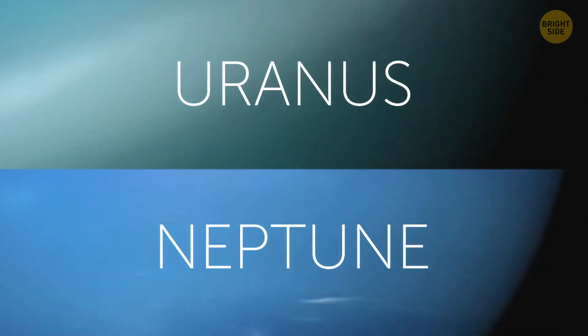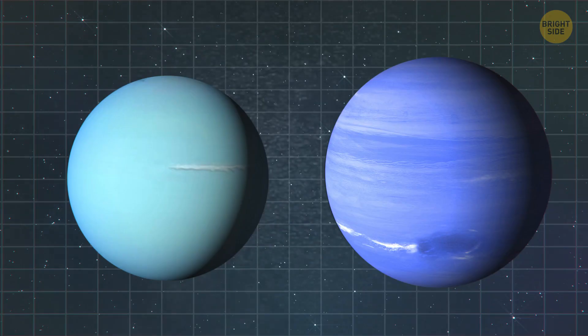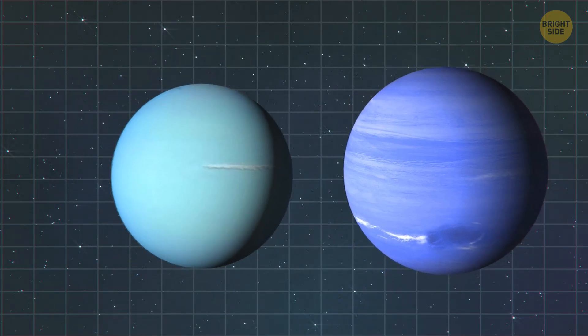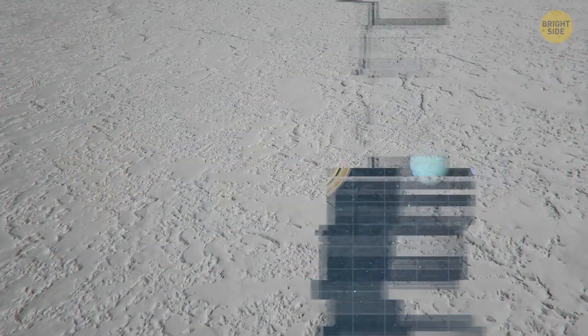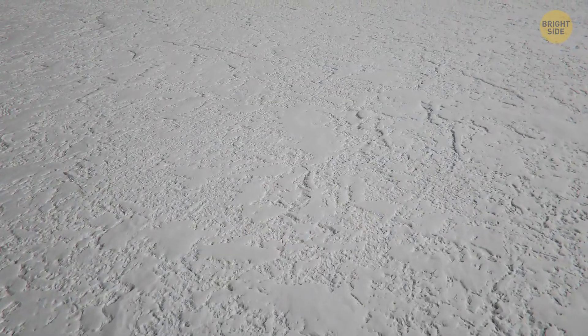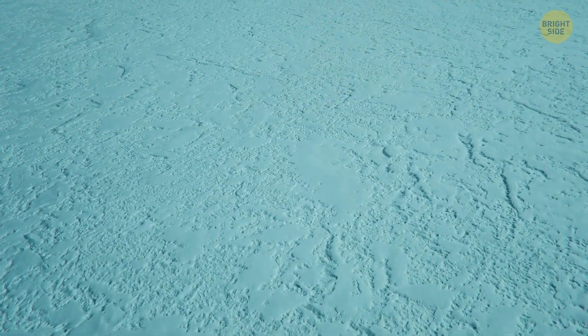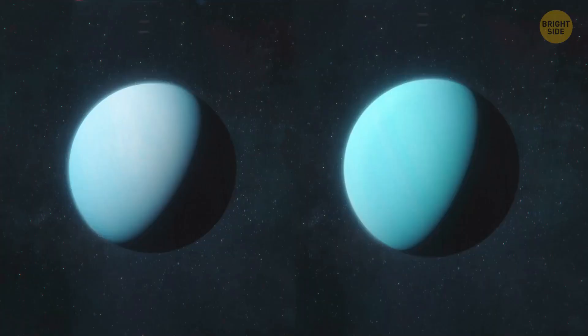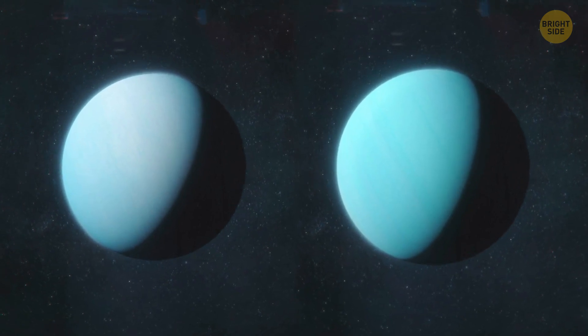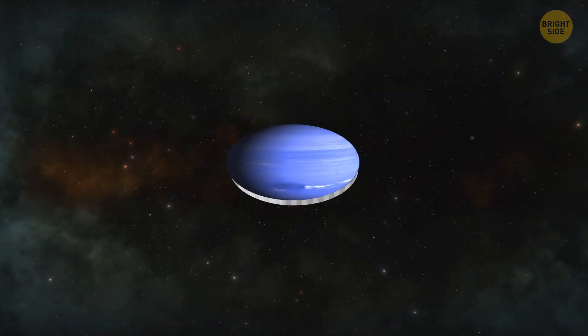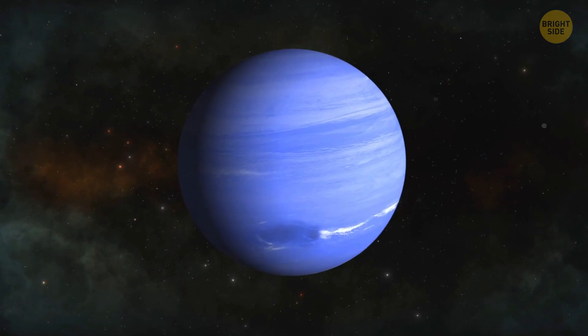Both Uranus and Neptune are ice giants. These planets are the same size, larger than Earth, but smaller than Saturn and Jupiter. They both have icy interiors, deep atmospheres, and similar color. Very beautiful bluish-green. If either of these planets replaced the moon, the consequences would be the same. So, let's flip a coin. Okay, it would be Neptune you'd see in the sky one day.